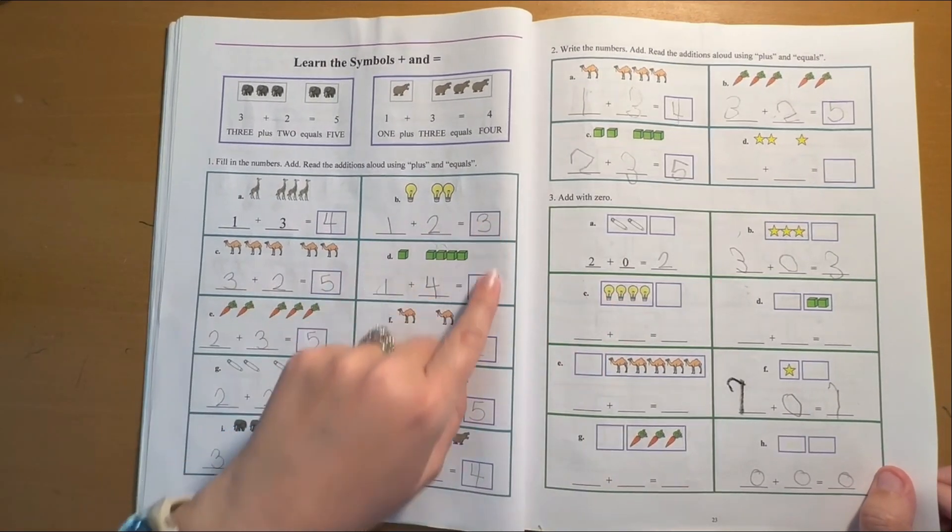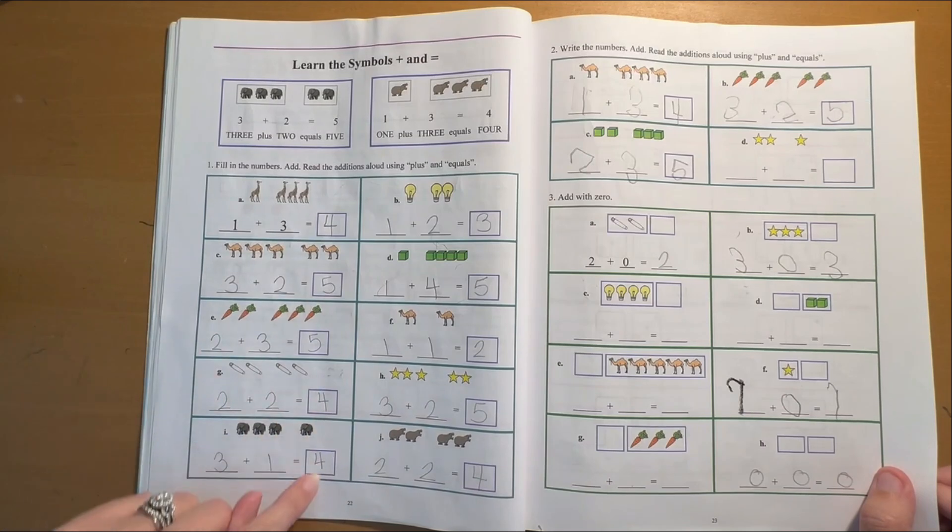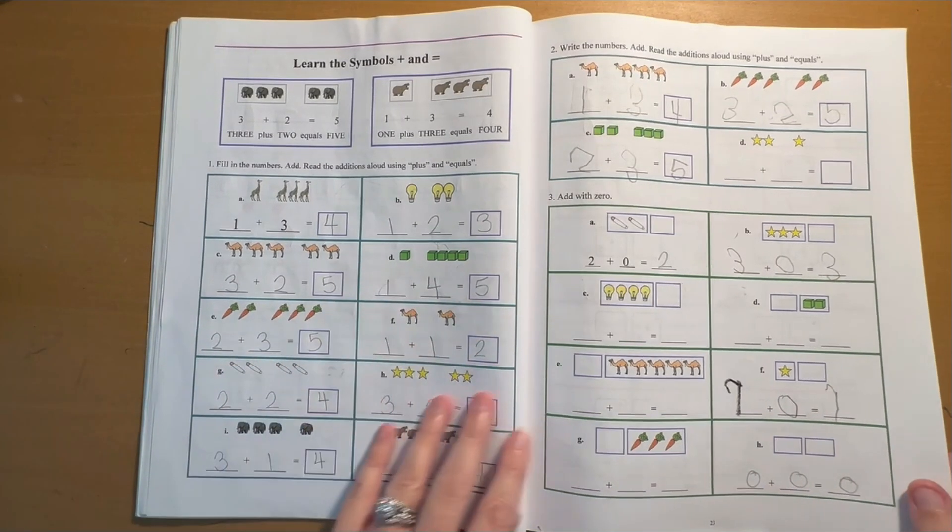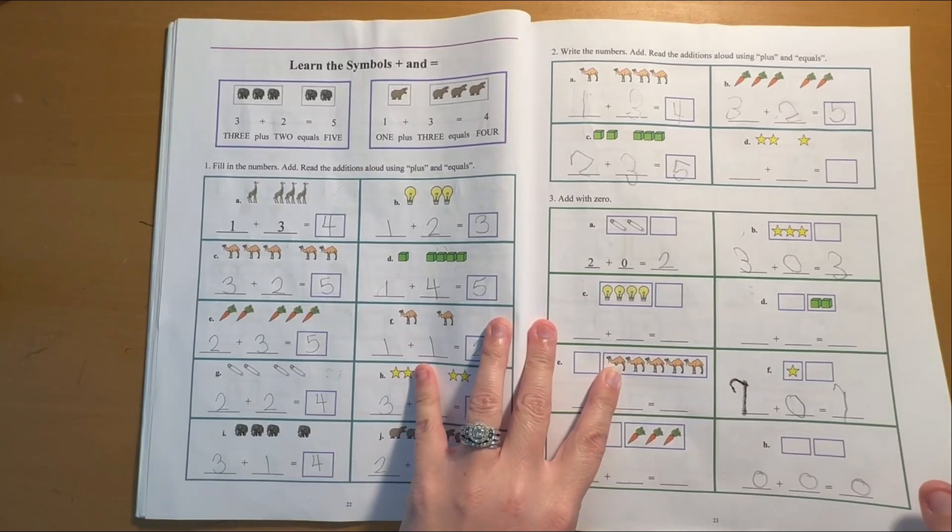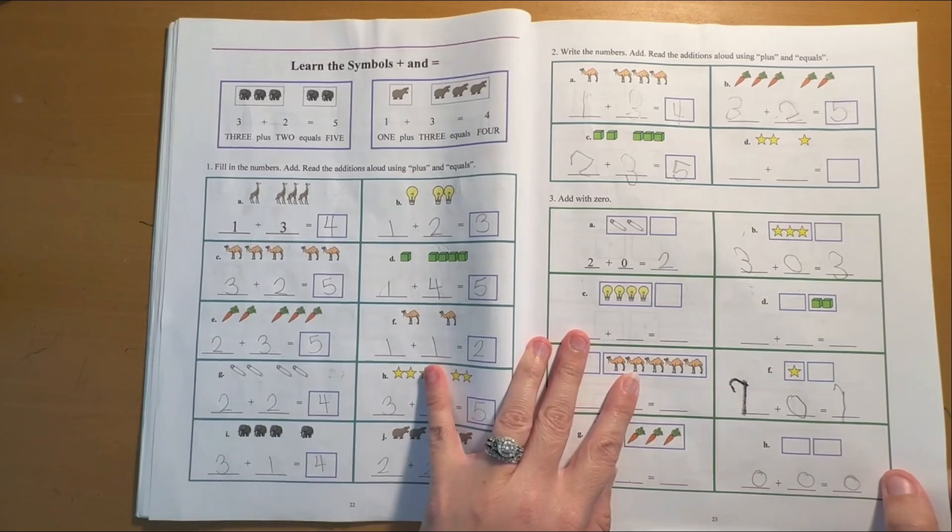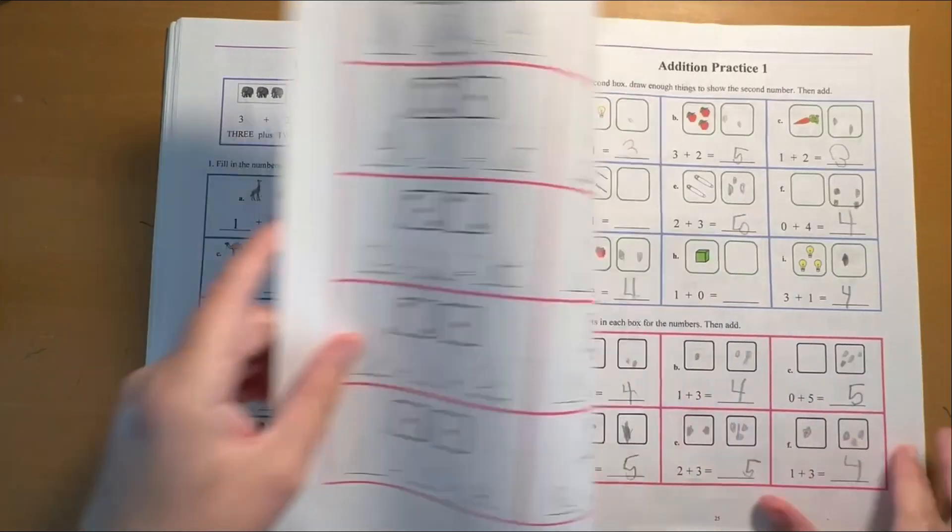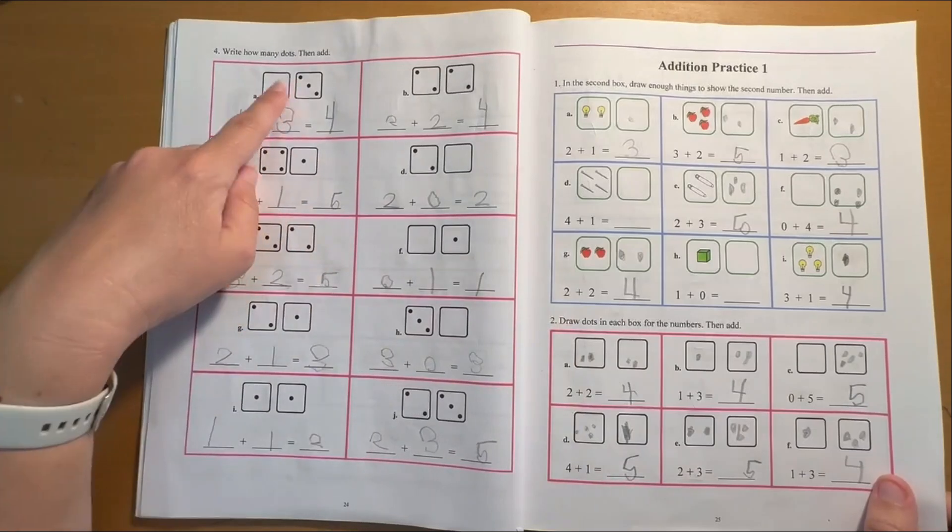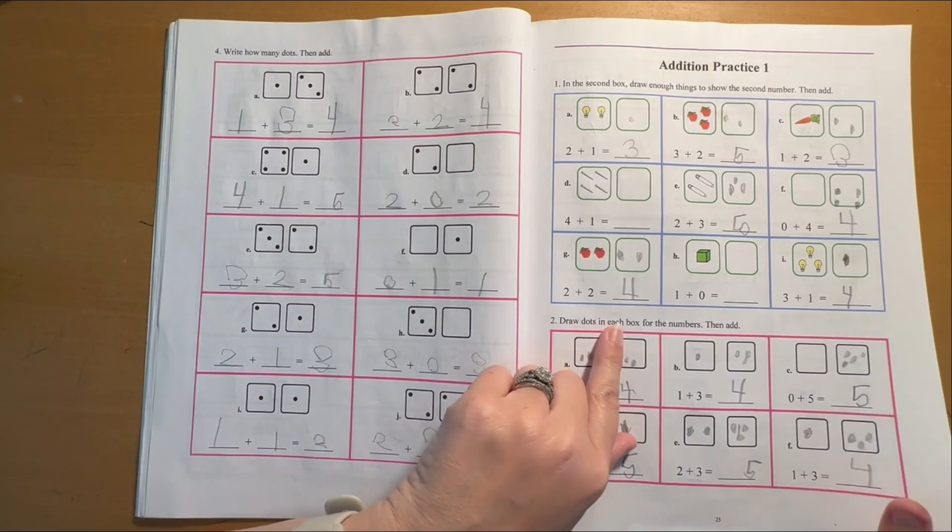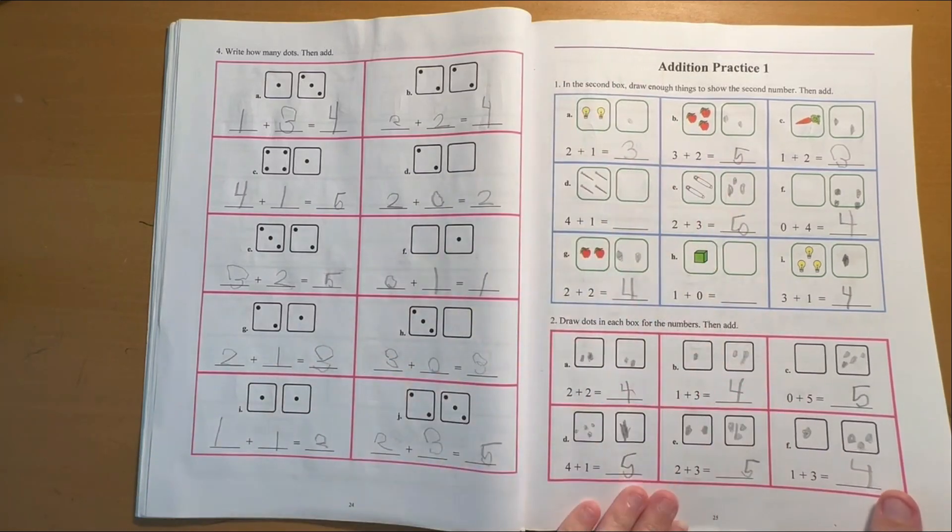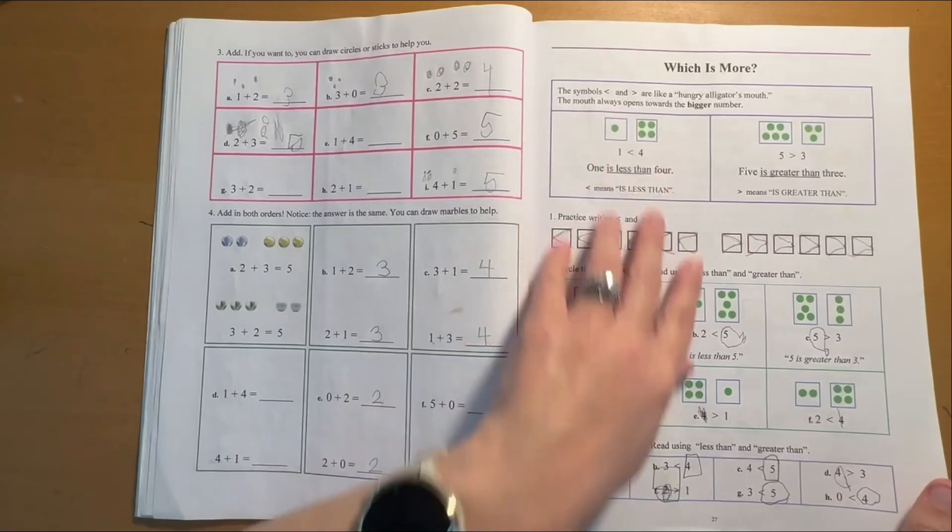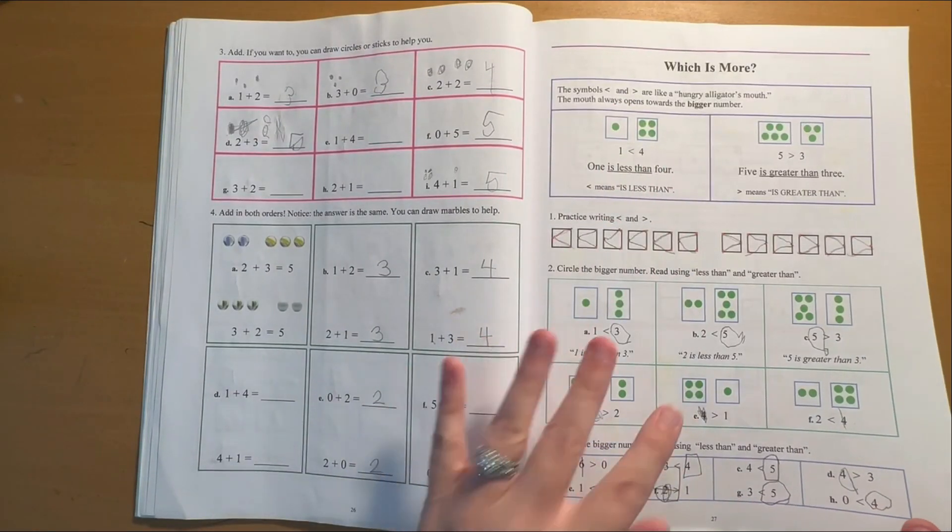As you can probably tell here, I was writing the numbers for her so that she could concentrate on doing the math, which is totally okay if your kid is more ready to do the math than they are to do the writing. Again, now you're going to practice it with these dice. Now we're going to practice adding one, some more or less, greater than or less than.